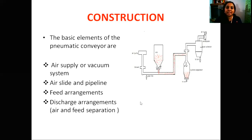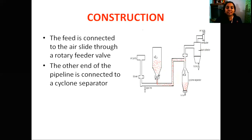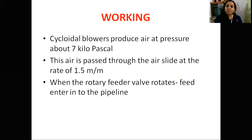These are the basic elements of the pneumatic conveyor system. The air slide chute is present with a long pipeline, and the rotary feeder valve is connected to the hopper. There is also a cyclone separator. This covers the construction part. Now let's talk about the working of the pneumatic conveyor system.